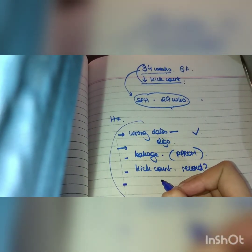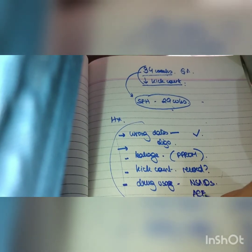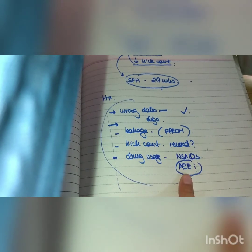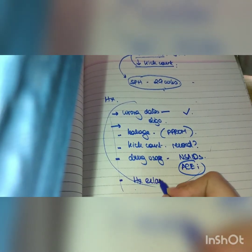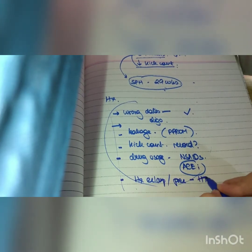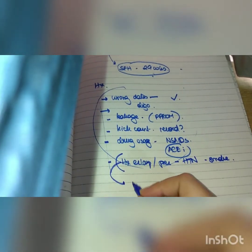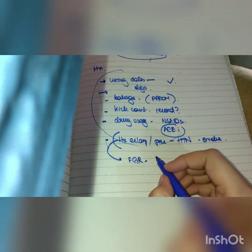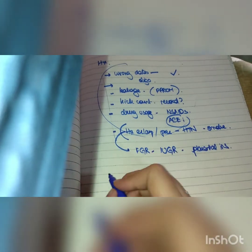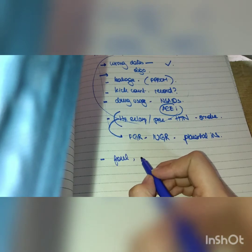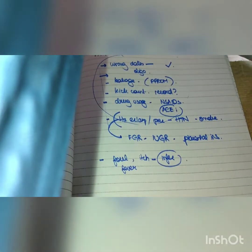Next, ask about drug usage — is she taking NSAIDs or ACE inhibitors, which are absolutely contraindicated in pregnancy? She may not know, especially if taking them for pre-existing hypertension. Also ask about history of eclampsia, pre-eclampsia, or any hypertensive disorder, and whether she smokes. These questions direct attention toward fetal growth restriction, intrauterine growth retardation, or placental insufficiency. Also ask about foul-smelling discharge, itching, or fever to rule out infection.